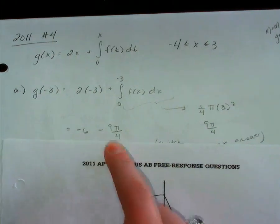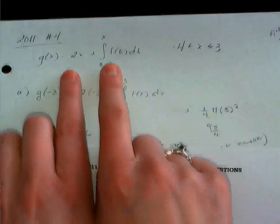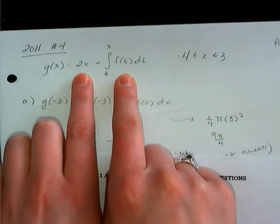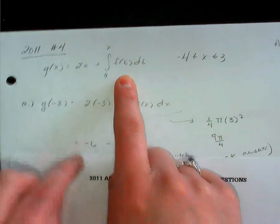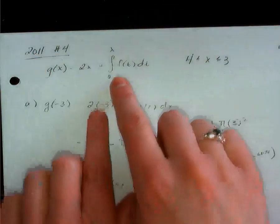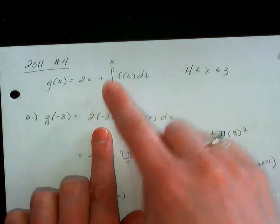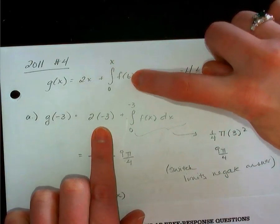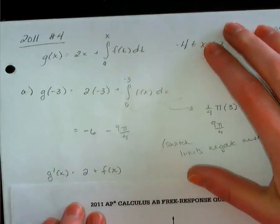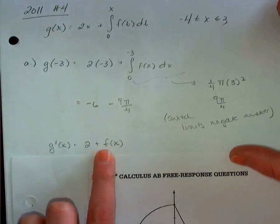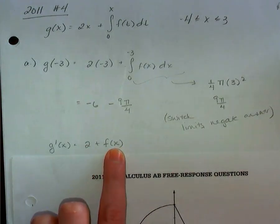Now, part A also says find g prime. So we have to take the derivative of g. The derivative of 2x is 2. And then when I take the derivative of an integral, x is the upper limit. x goes in place of all my t's. So g prime is 2 plus f(x). That's your fundamental theorem of calculus.